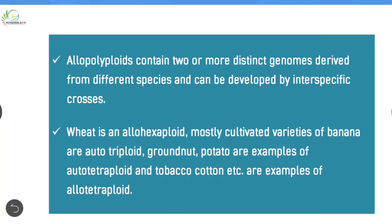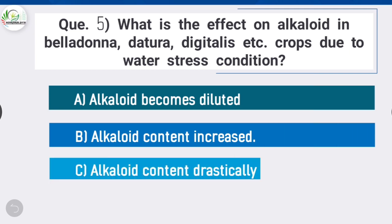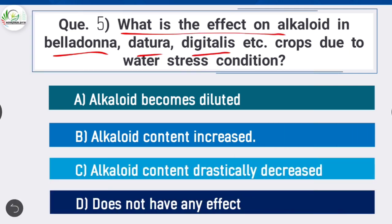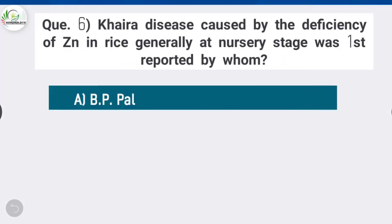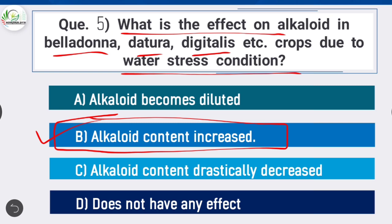Question 5: What is the effect on alkaloid content in belladonna, datura, digitalis, etc. crops due to water stress conditions? Option B is correct: alkaloid content increases. Water stress conditions have some harmful effects on the yield of water-sensitive crops, but some beneficial effects are also there. The content of alkaloids for belladonna, datura, digitalis, etc. increases due to water stress, and rubber content is also increased significantly.